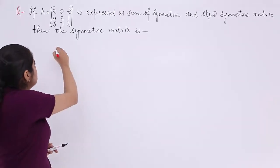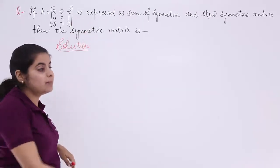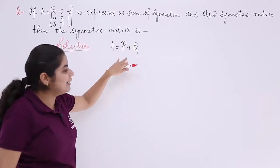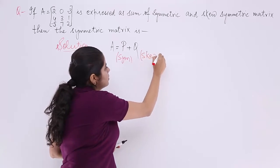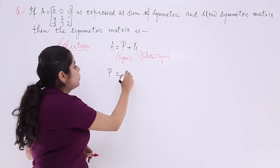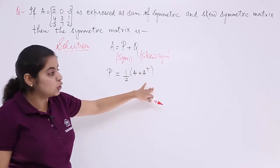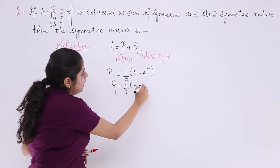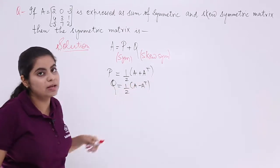Let's write the solution. Let A equal P plus Q, where P is the symmetric matrix and Q is the skew-symmetric matrix. From our previous videos, P which is the symmetric matrix equals half into (A + Aᵀ), and Q which is the skew-symmetric matrix equals half into (A − Aᵀ).